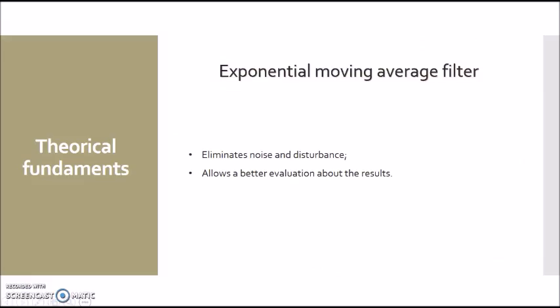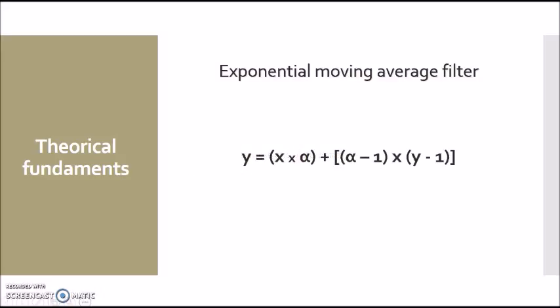In this work, we use an exponential moving average filter. Its basic function is to eliminate noise and disturbances so that you can make a better analysis of the collected data with better accuracy and precision. The formula consists of the filtered value, which is calculated using the raw value, which is the value collected by the data acquisition system. The alpha is the multiplied term, which ranges from 0 to 1, and indicates the weight you want to give to the raw value and to the filtered value that was collected immediately before the one that is being calculated now.